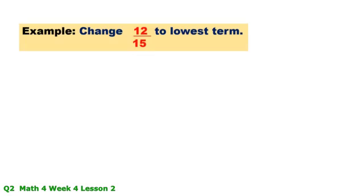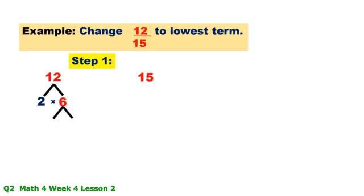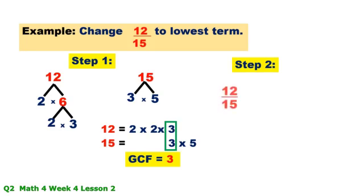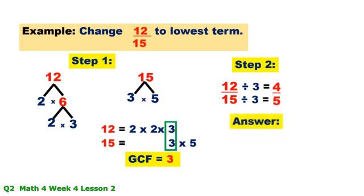Example: Change 12/15 to lowest term. Step 1: Factors of 12 — 2 × 6, factors of 6 — 2 × 3, so 12 = 2 × 2 × 3. Factors of 15 — 3 × 5, so 15 = 3 × 5. The GCF is 3. Step 2: 12/15 divided by GCF of 3: 12 ÷ 3 = 4, 15 ÷ 3 = 5. The lowest form is 4/5.